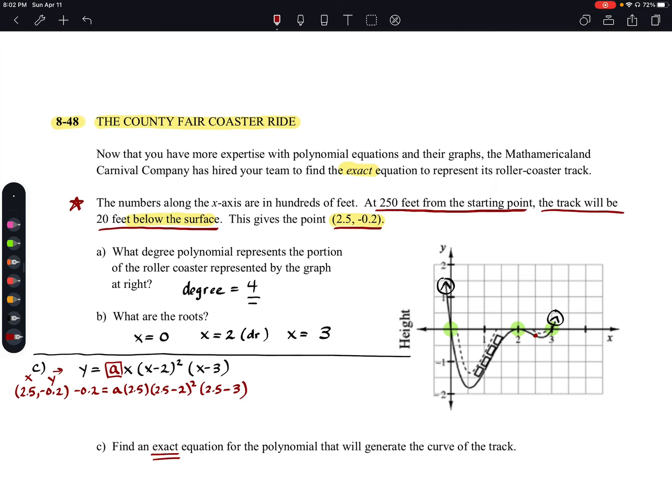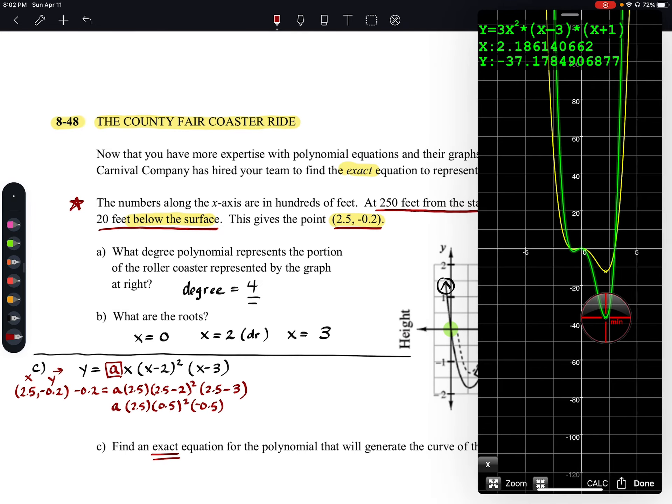You can use a calculator on this part if you want to. Here we're going to have an a, this would be still 2.5. 2.5 minus 2 is going to be a 0.5 squared still. And then 2.5 minus 3 is going to be a negative 0.5. If you want to use a calculator to multiply those, you can do that.